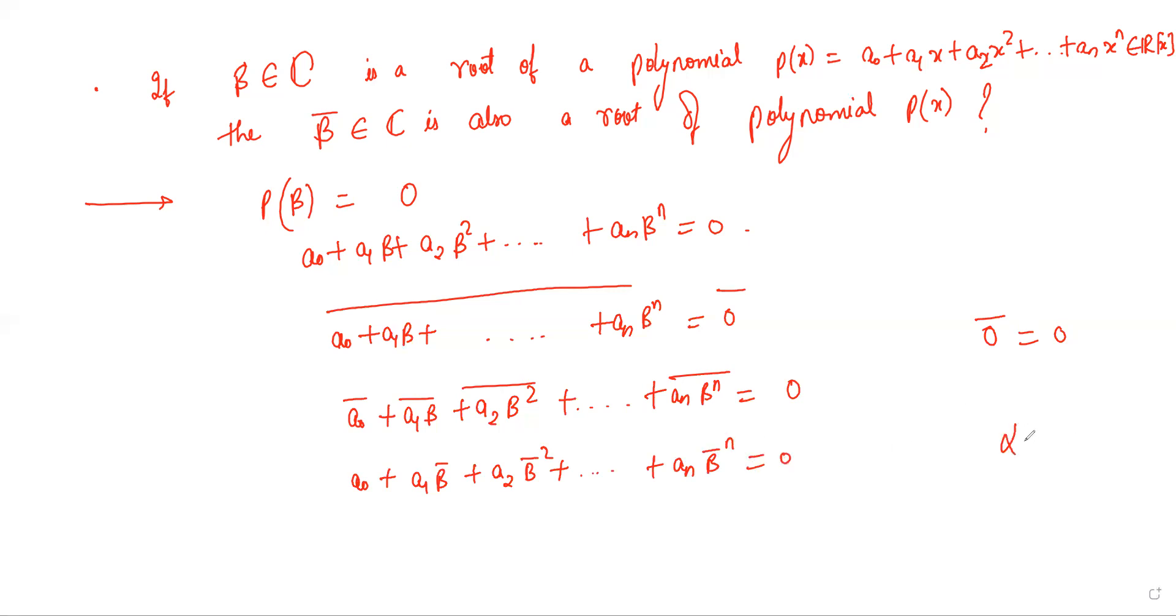We use the fact that alpha plus gamma bar equals alpha bar plus gamma bar, and alpha raised to k bar equals alpha bar power k. What is this? This is p of beta bar is equal to 0.